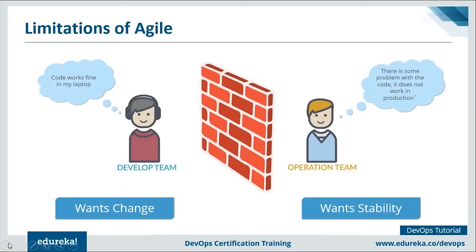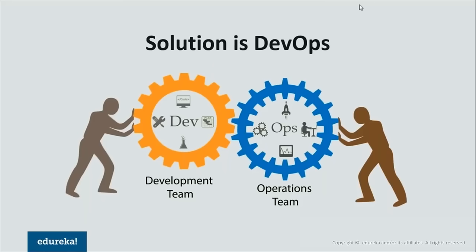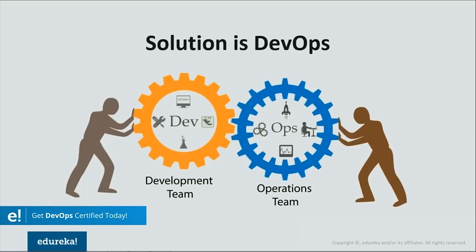To recap: we started with the waterfall model, understood its stages and limitations, then moved to agile methodology and its limitations. The solution to all these problems is DevOps. DevOps is a software development strategy that bridges the gap between the dev and ops sides of the company. It is not a technology - it is a methodology: the practice of operations and development engineers participating together in the entire software lifecycle.